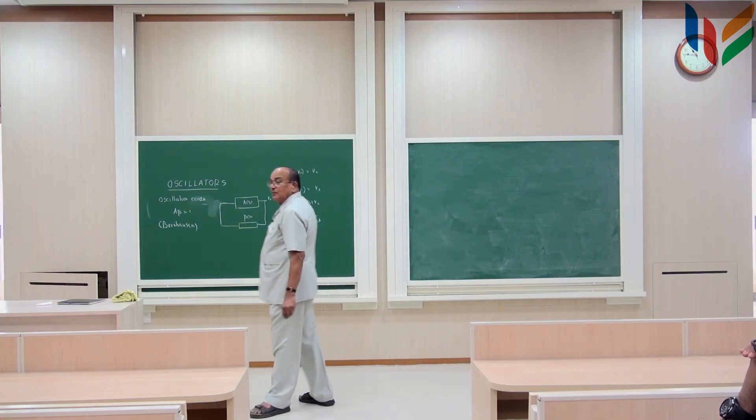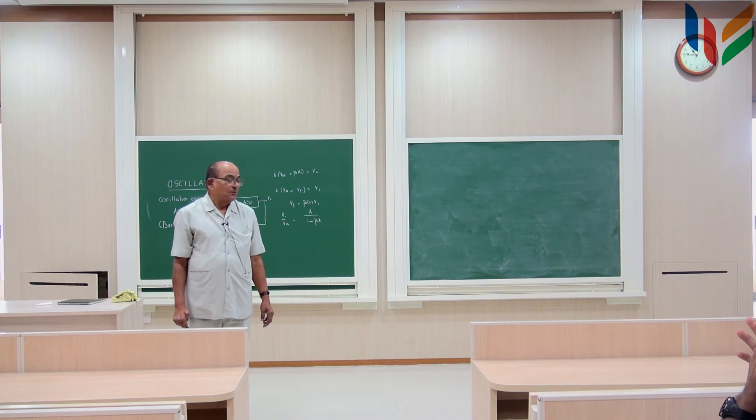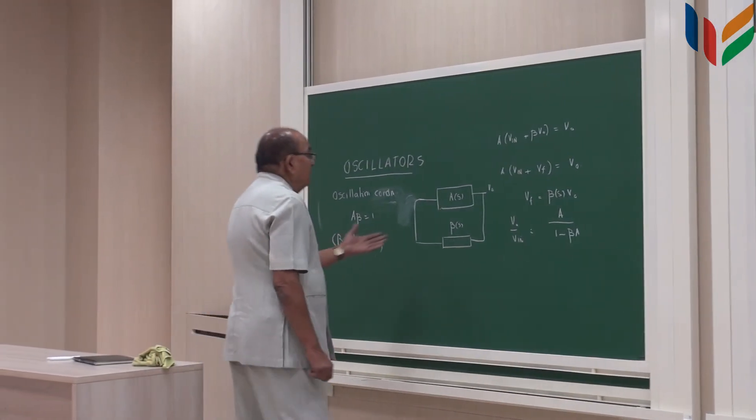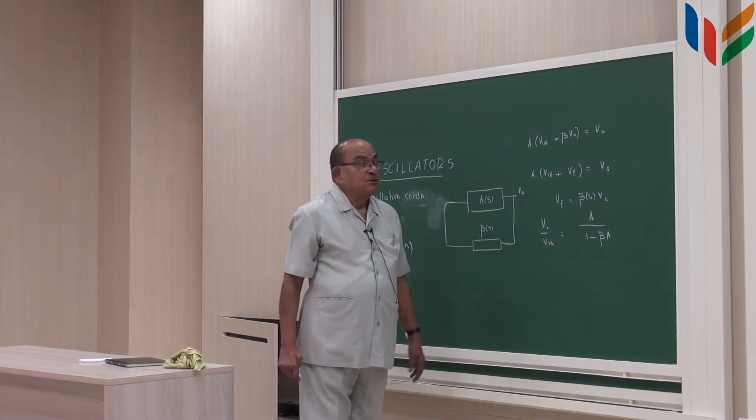So, you can think about infinite number of oscillators, which will give you various, which will give you output of a sine wave corresponding to choice of As and betas.